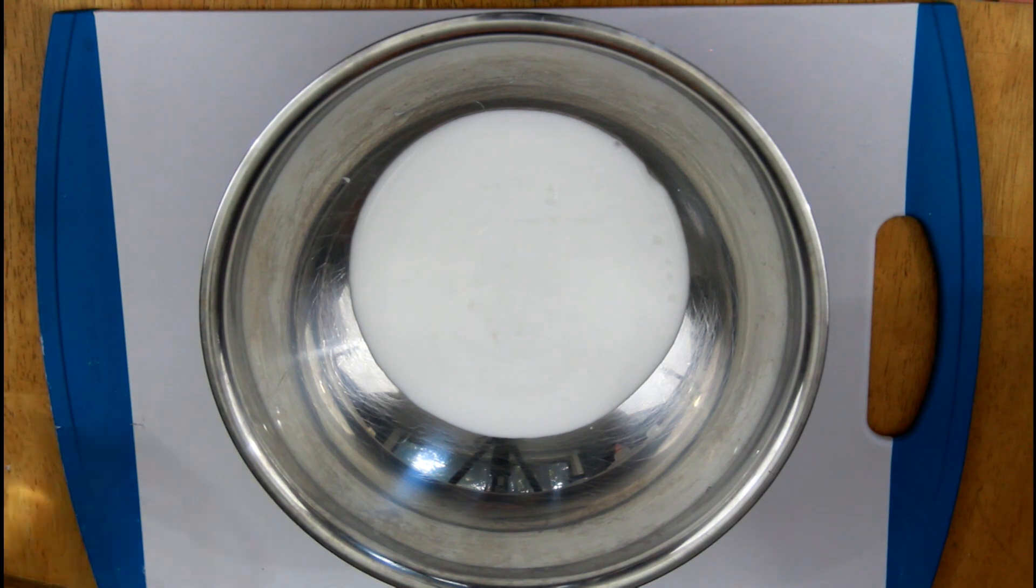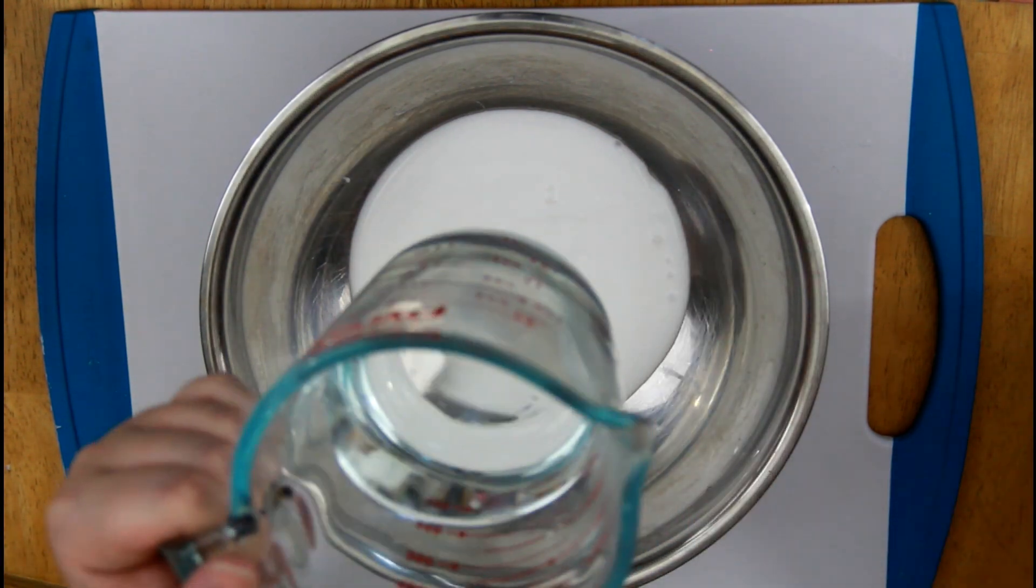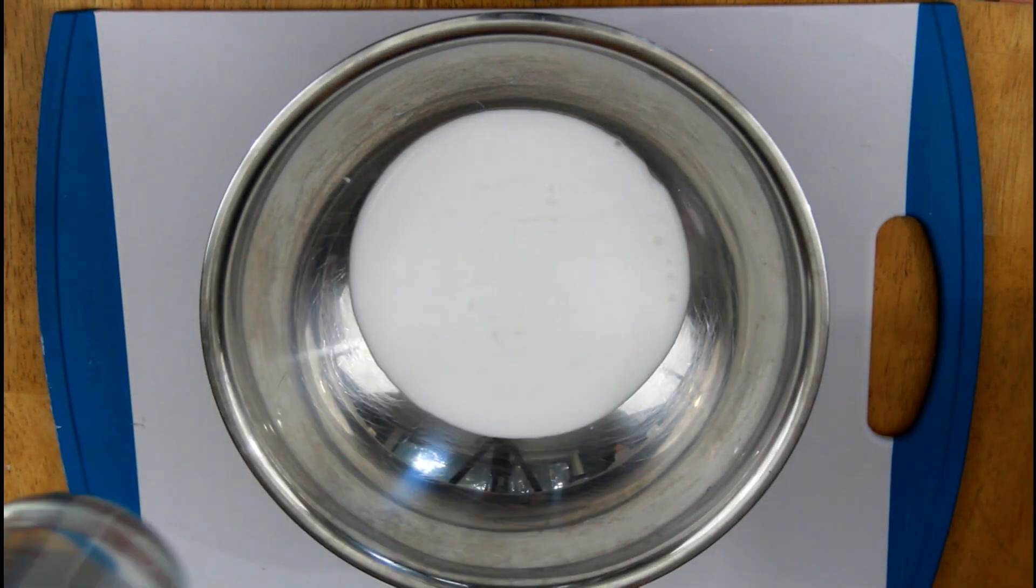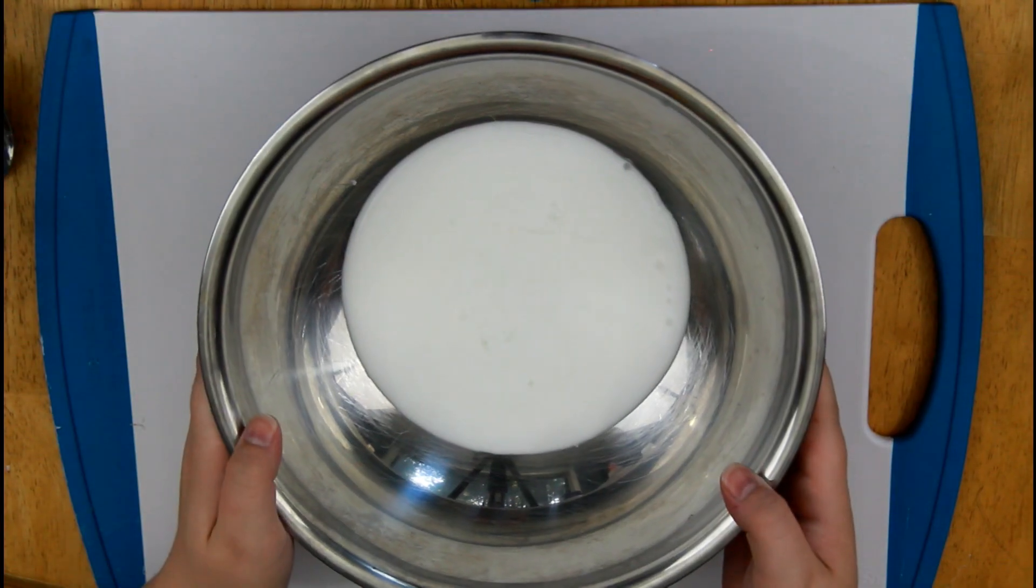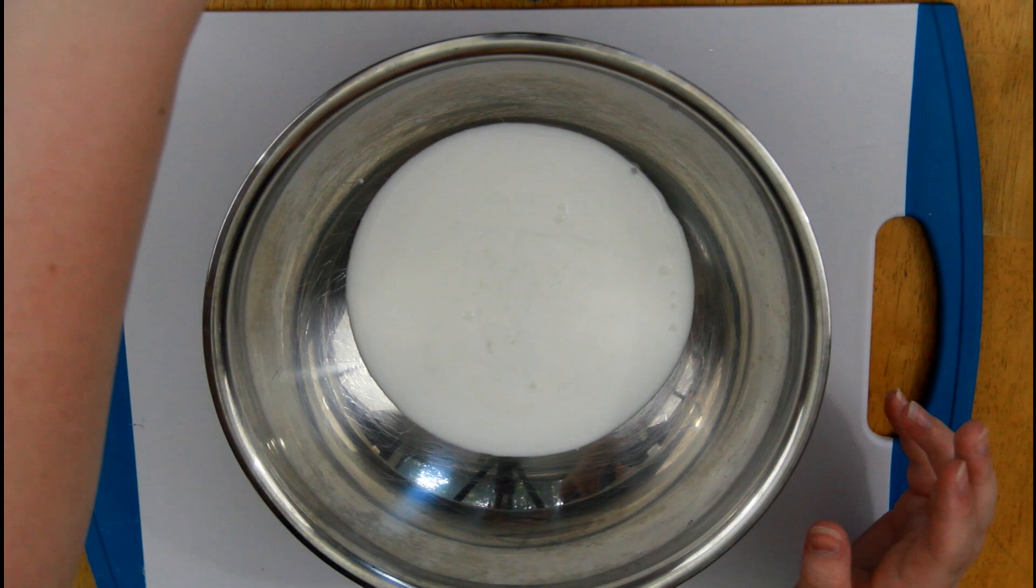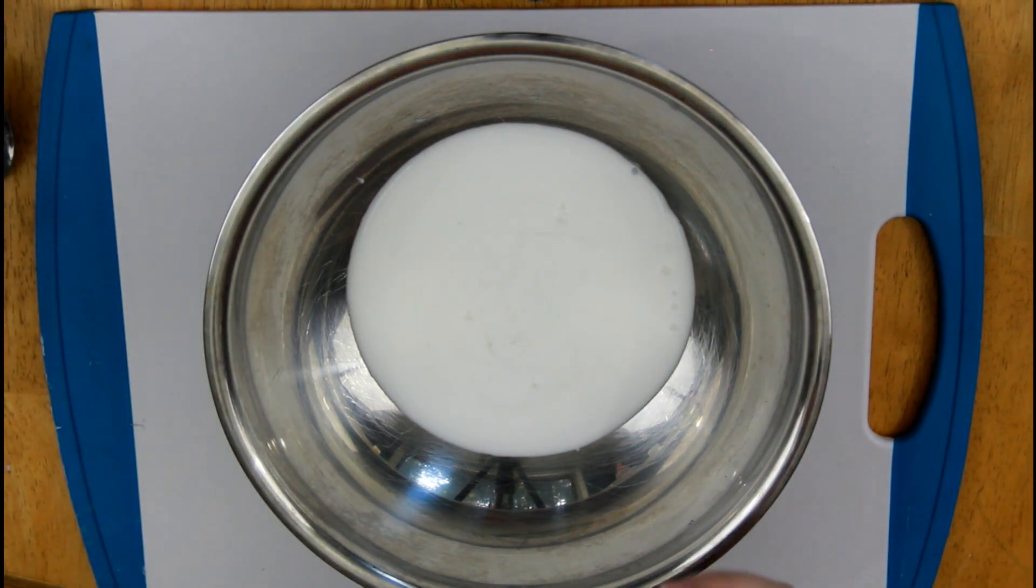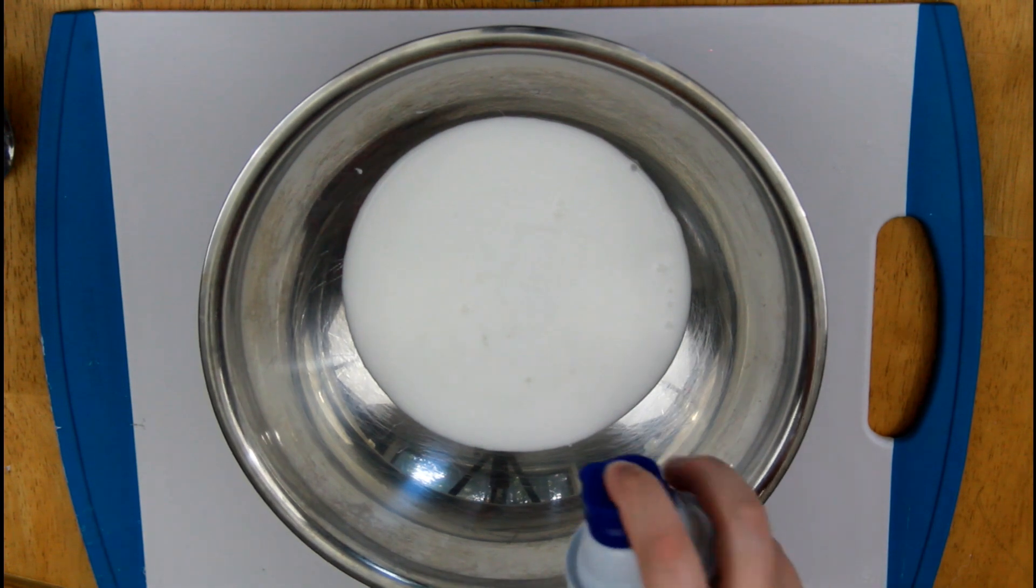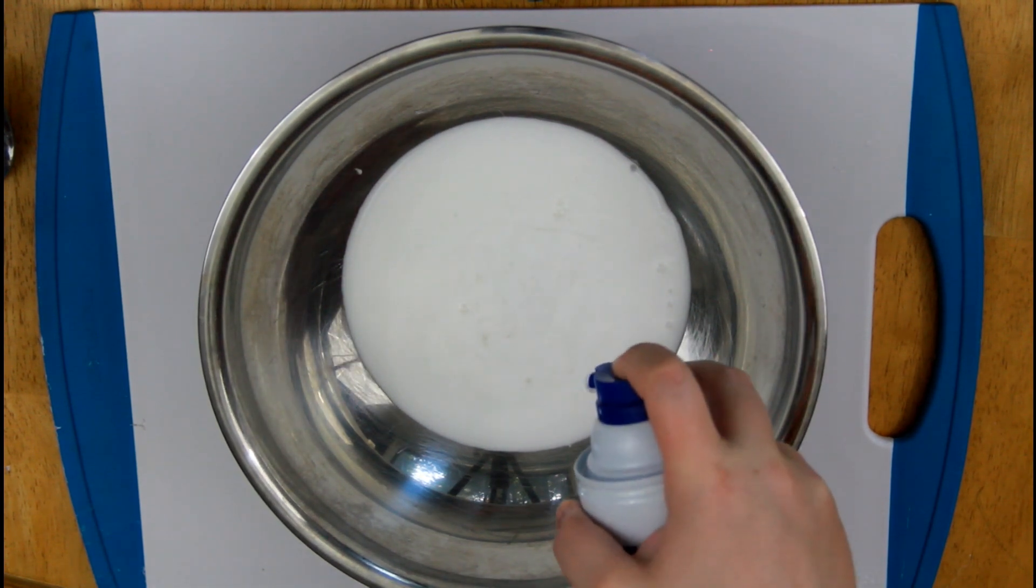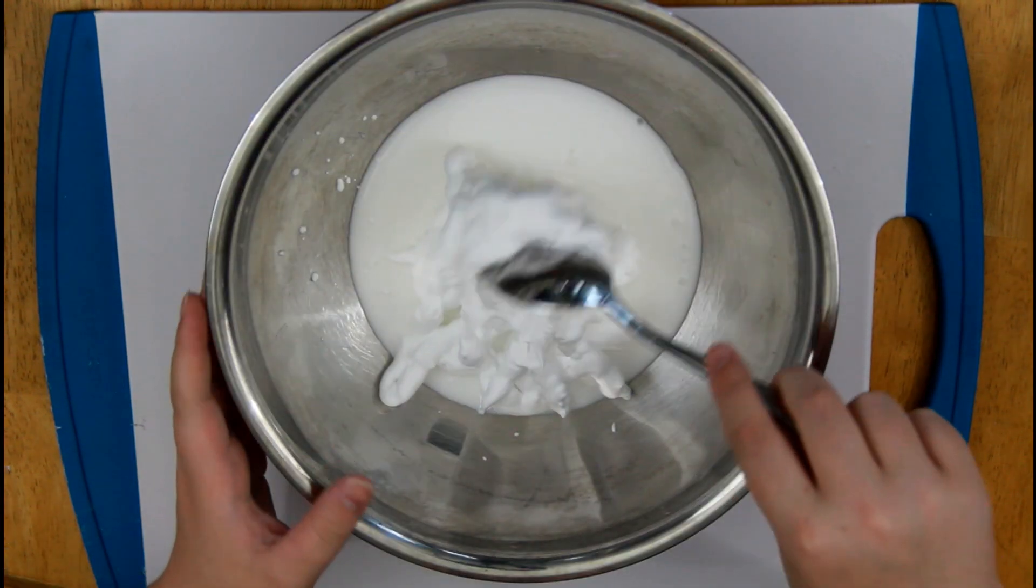Once you got your glue, I'm going to be adding a teaspoon of borax to a cup of hot water. Alright, then we're going to go back to our glue, and we're going to add some shaving cream. Now this is kind of optional on how much you want to add, depending on how fluffy you want it. I'm going to add about a cup's worth. And then you're going to mix these up.